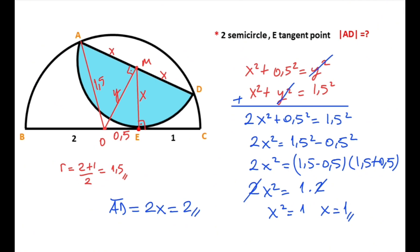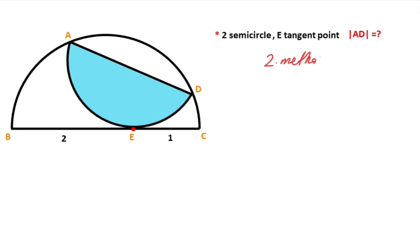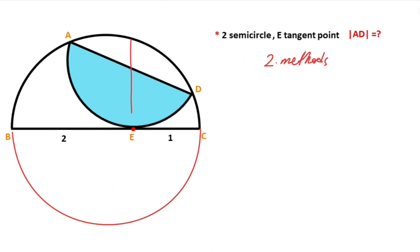That was the first method. Now we will calculate the diameter of the blue semicircle using a second method. First, if we complete the big semicircle to a full circle, and then draw a perpendicular line passing through point E, the intersection point M becomes the center of the blue semicircle. These segments become the radius of the blue semicircle.